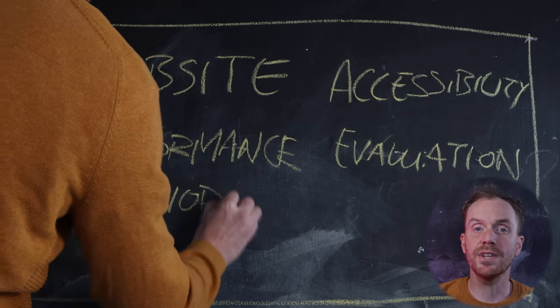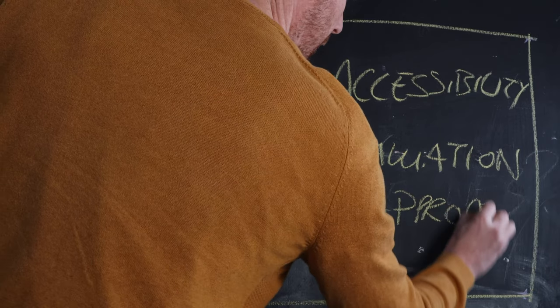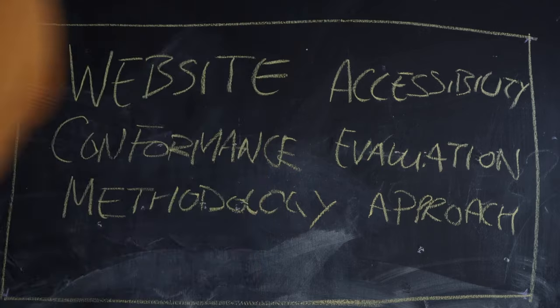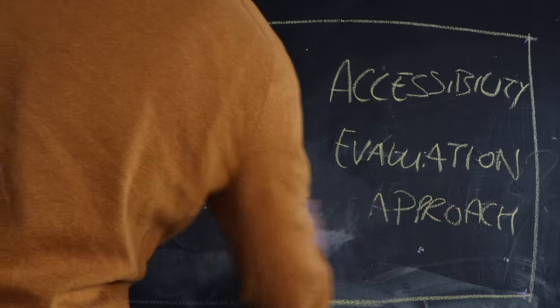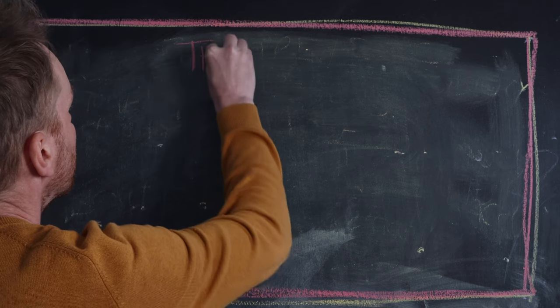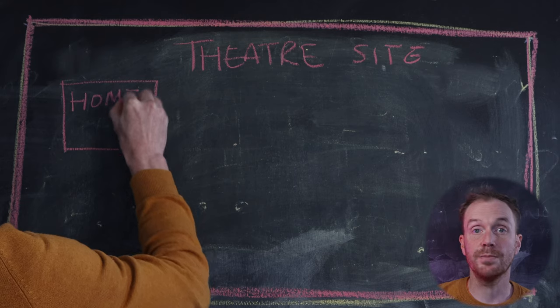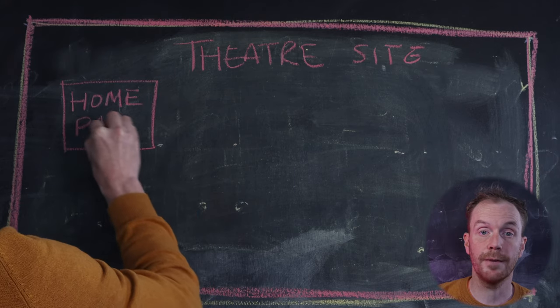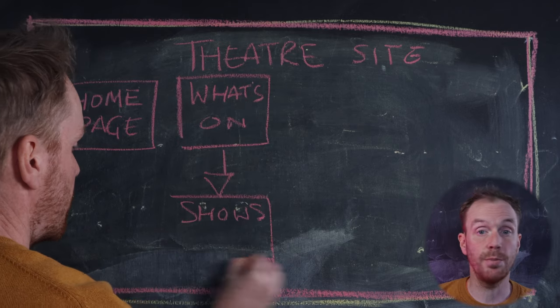You can use something like the Website Accessibility Conformance Evaluation Methodology approach, which is what gov.uk uses, but this approach is really for huge sites. So if you have a reasonably small site, a more common sense approach is likely going to work best for you. Think about the site you're going to test and break down the different types of pages you have. If we take a theater site as an example, we've got a homepage pulling in teasers from across the site, and it's likely got a what's on page, with hundreds of show pages underneath that.